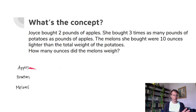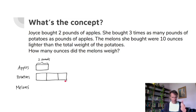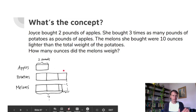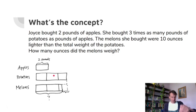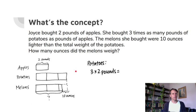Draw the tape diagram: apples are two pounds, potatoes are three times as much. The melons bar is a little shorter than the potatoes bar — just 10 ounces less. The question mark is the weight of the melons; the known gap is that 10-ounce difference. Start with the potatoes: three times two pounds is six pounds.